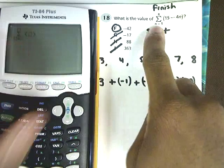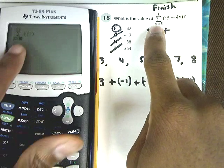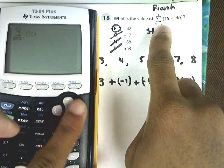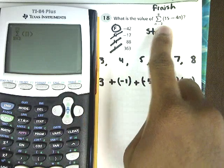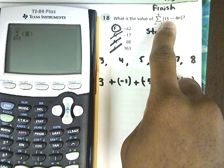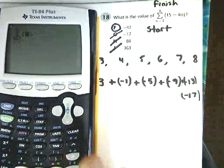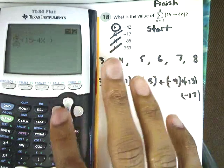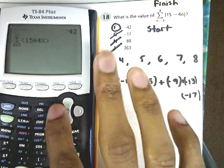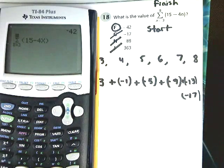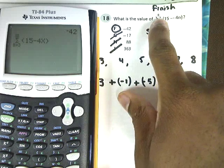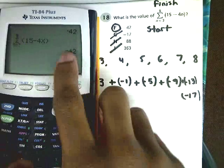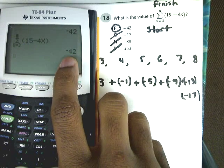So again, you have the variable in here, so you can plug in the variable X. And again, you're supposed to start at the number 3, so you can plug in the number 3. Then slide over and put in what your formula is. Well, your formula is just 15 minus 4N. So 15 minus 4X. It's the same thing, we're just changing the variable. And then we just need to go to the top of our summation and put where we stop. Well, we have to stop at the number 8. And then once you have all that entered in, you can just press enter, and it will give you that same value of negative 42.